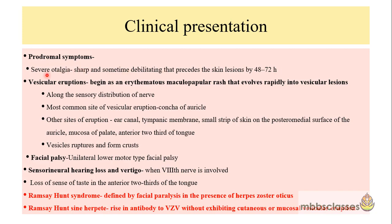Once the otalgia develops, the next clinical presentation is eruption of the vesicles. In most patients, vesicular eruption and facial paralysis occur together, but in about 25% of cases, the vesicular eruptions develop ahead of the facial palsy. These eruptions first begin as an erythematous maculopapular rash and later develop into vesicular lesions.